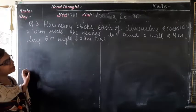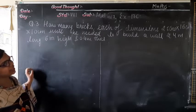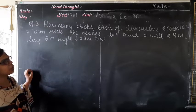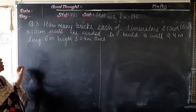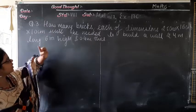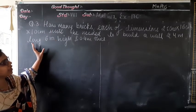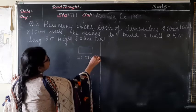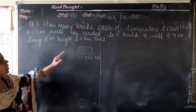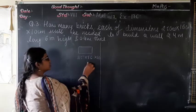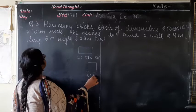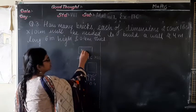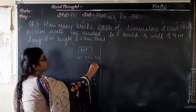How many bricks each of dimension 25 cm × 16 cm × 10 cm will be needed to build a wall 24 meters long, 6 meters high, and 0.4 meters thick? Here you are given the brick dimensions as 25 × 16 × 10 cm. You need to find how many such bricks to build a wall of those dimensions.